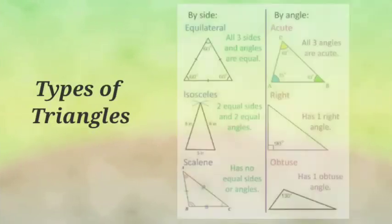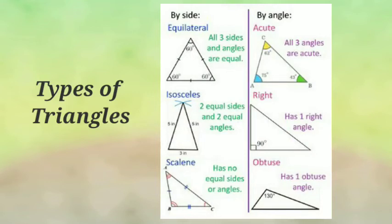Next concept is Types of Triangles. Here we can divide the Triangles in two categories: one is by sides and the other one is by angles.